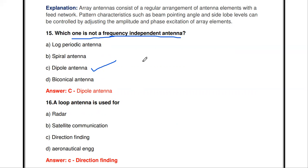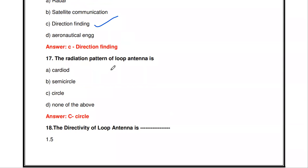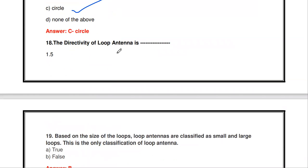A loop antenna is used for what? The main application of the loop antenna is direction finding — a very important point. The radiation pattern of a loop antenna: what is its shape? The radiation pattern of a loop antenna is circular in nature.